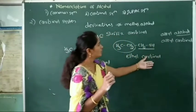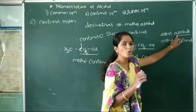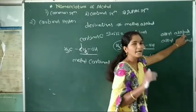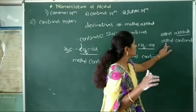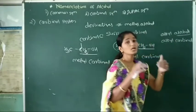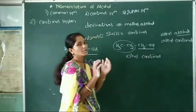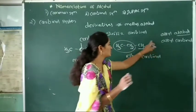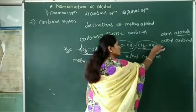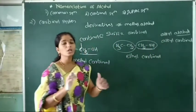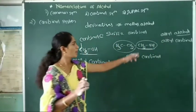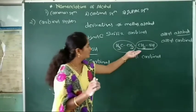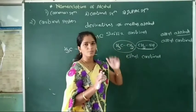In the common system, we name alcohols as alkyl alcohol, using alcohol as the suffix. In the carbynol system, we form the name as alkyl carbynol. So in the common system the suffix is alcohol, but in the carbynol system the suffix used is carbynol, meaning it is a derivative of methyl alcohol. CH2OH can be considered as carbynol, and when an ethyl alkyl group is attached, the name is ethyl carbynol.